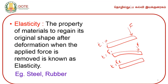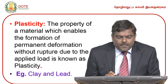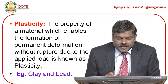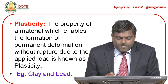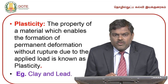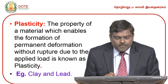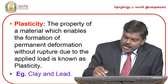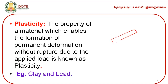Best examples of elastic materials are steel and rubber. Plasticity is the property of a material which enables the formation of permanent deformation without rupture due to the applied load. When a force is applied on an object, there will be some permanent deformation. Even after withdrawal of the applied force, the object will not regain its original position.